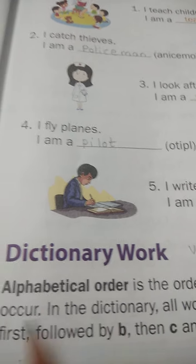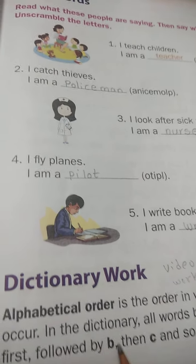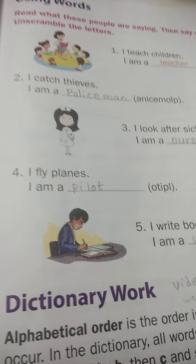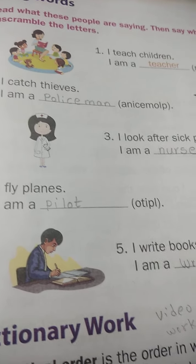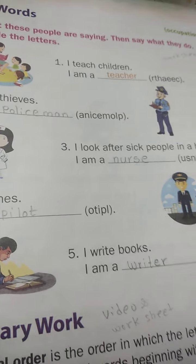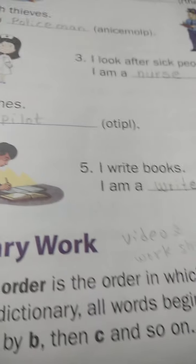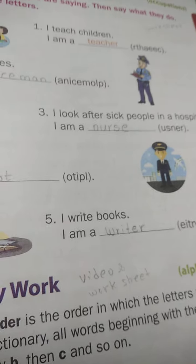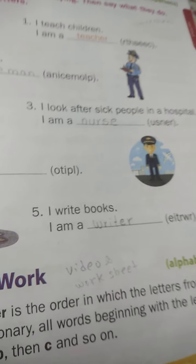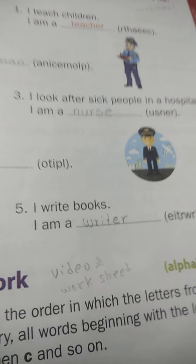Next one — alphabetical order. You know what the alphabets are. Alphabetical order means A, B, C, D, E, F, G, H, I, J, K, L, M, N, O, P, Q, R, S, T, U, V, W, X, Y, Z — in order, in a line.